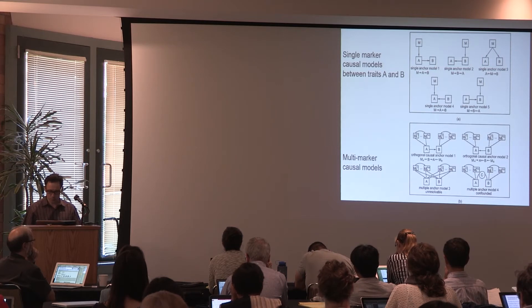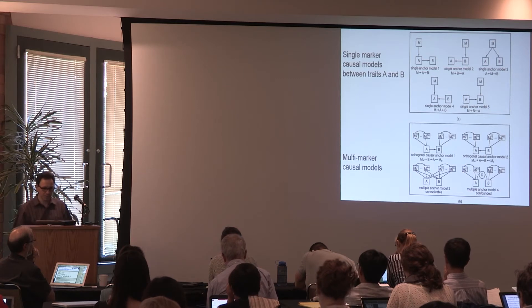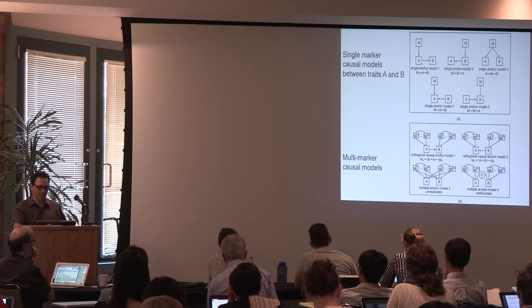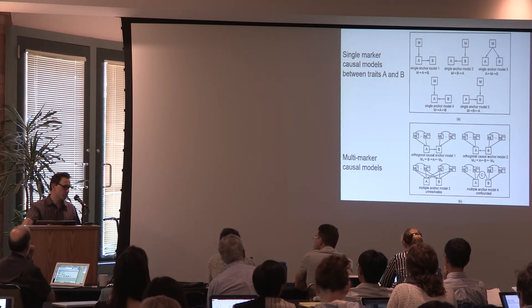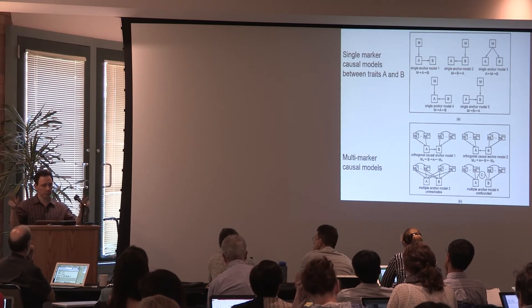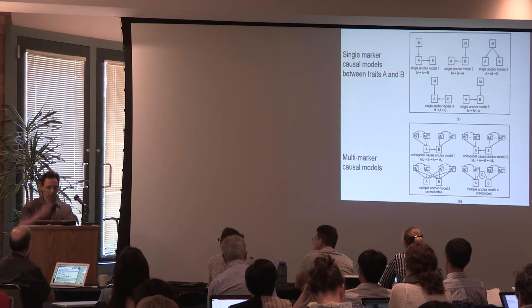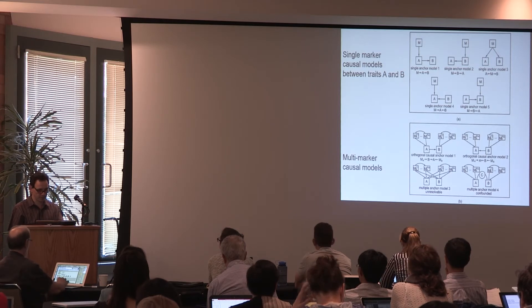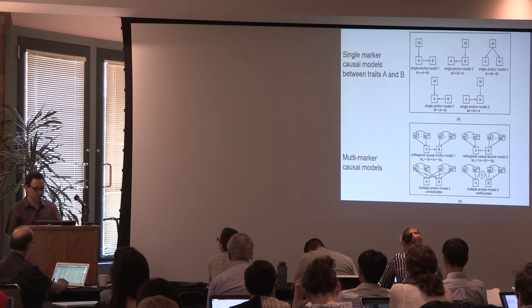Before I move on, I want to say one thing. Every model you see here can be evaluated with the generalization of a multivariate regression model. The idea is we will fit some sort of a multivariate model to each of these five scenarios and we get a fitting index. Then we say my data tell me that model one fits the data the best. Then you would say, according to my data, A leads to changes in B. That's the idea.